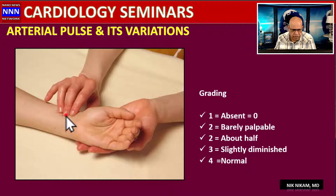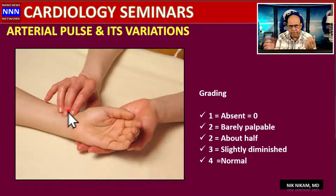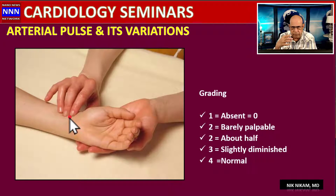The best way to palpate an arterial pulse is by using three fingers. You use the two outer fingers to stabilize the artery while the middle finger feels the pulsations. A lot of people do it with one finger, but that is not the best way. This is the proper way to monitor the pulse.